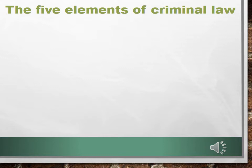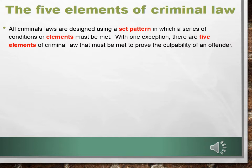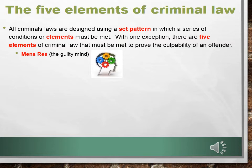The whole point of criminal law is to tell people what they cannot do in society. Because of this, we need to be very clear when telling people what they can and cannot do. All criminal laws are designed using a set pattern in which a series of conditions or elements must be met. With one exception, there are five elements of criminal law that must be met to prove the culpability of an offender.